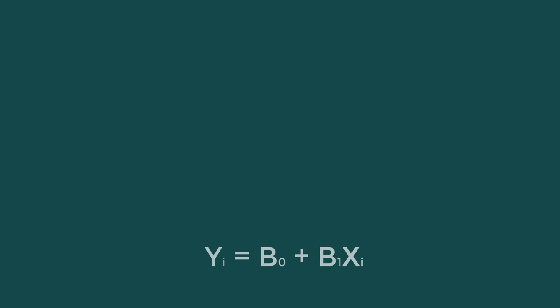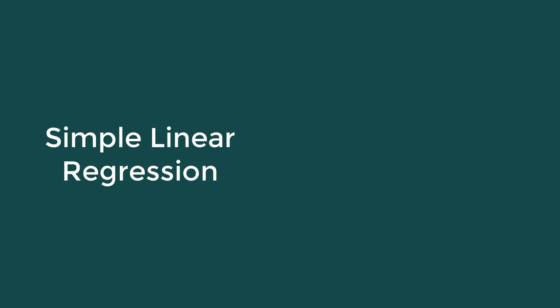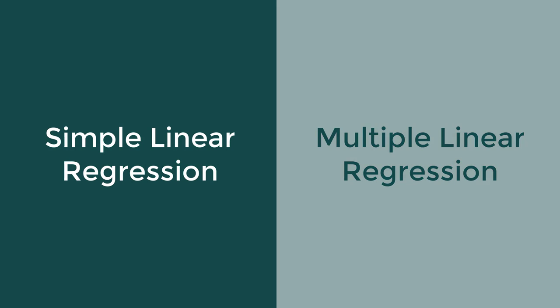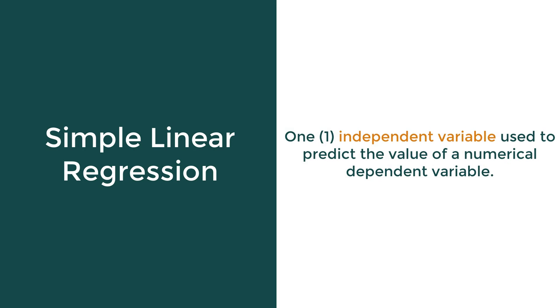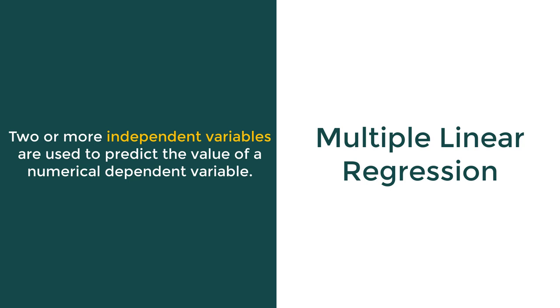A linear regression model is used to perform the task of predicting the value of one dependent variable y, also known as the target variable, based on the value of one or more independent x variables, also called predictors. The two types of linear regression are simple linear regression and multiple linear regression. If there is only one independent variable used to predict the value of a numeric dependent variable, it is called simple linear regression. However, if two or more independent variables are used, it is called multiple linear regression.